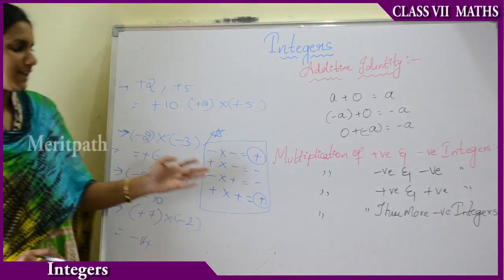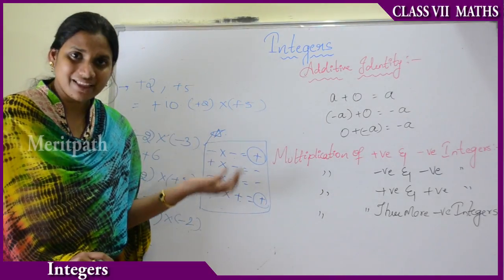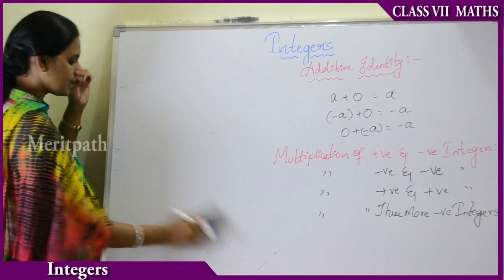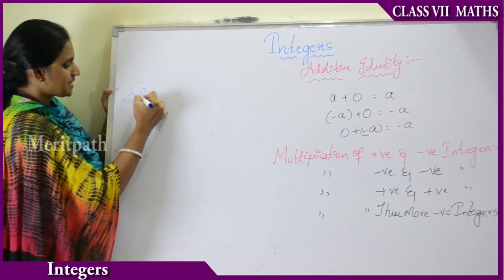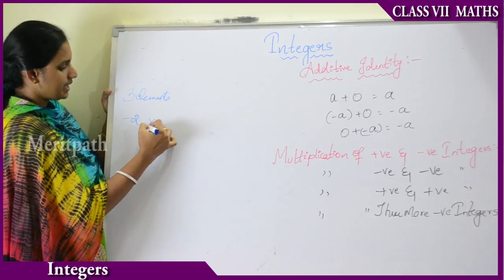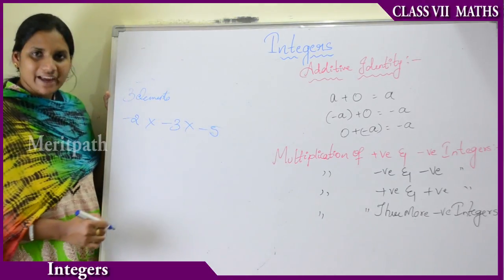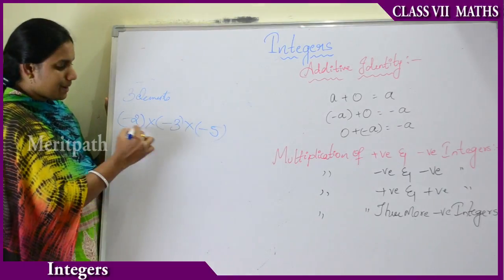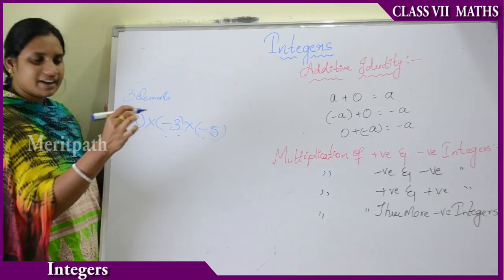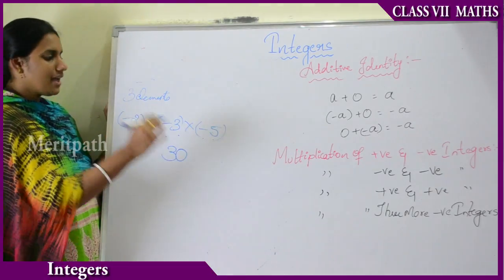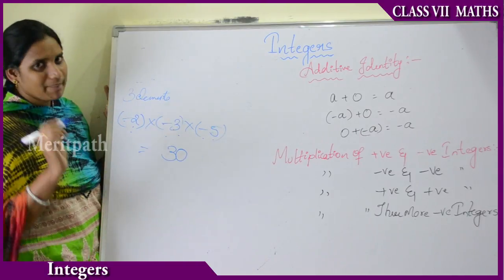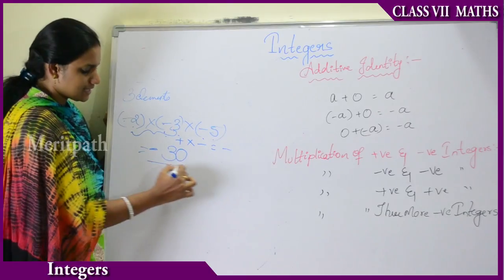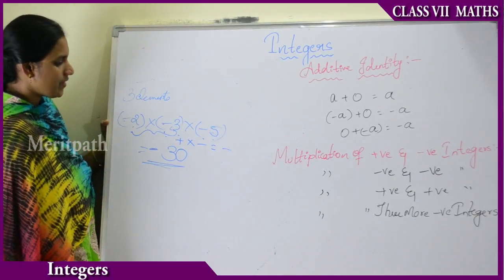Now let us see the multiplication of three or more integers. For example, let us multiply three elements: minus 2 into minus 3 into minus 5. The product of the numbers is 2 times 3 times 5 which is 30. Then checking the signs: minus into minus is plus, and plus into minus is minus. So the resultant is minus 30.